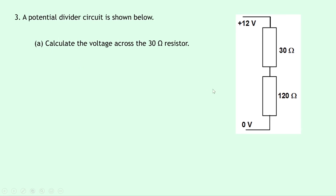Question three shows a potential divider circuit with a 30 ohm and a 120 ohm resistor in series. This diagram looks different — the circuit is flipped on its side compared to before. There's no battery drawn, but we have a potential difference of 12 volts between the two ends — 0 volts at one side and 12 volts at the other.